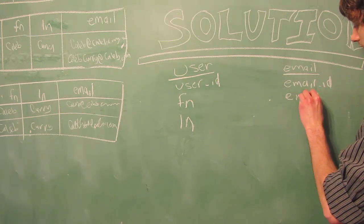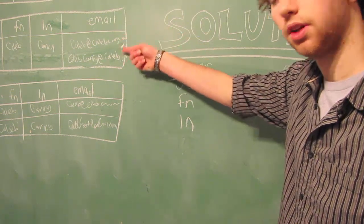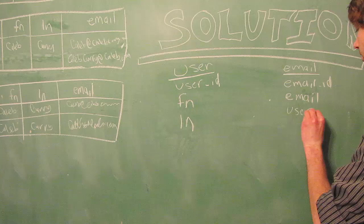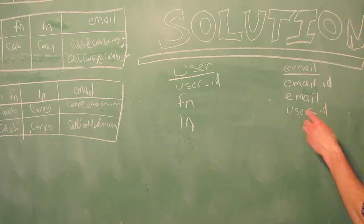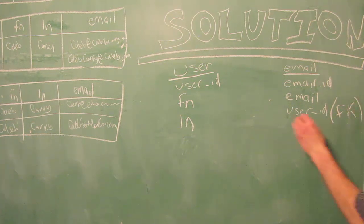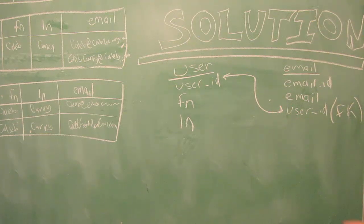which is going to be the actual email address, which in this case would be these. And then we're going to have a user ID. Now this is going to be a foreign key that references this user ID, the primary key of the user table.